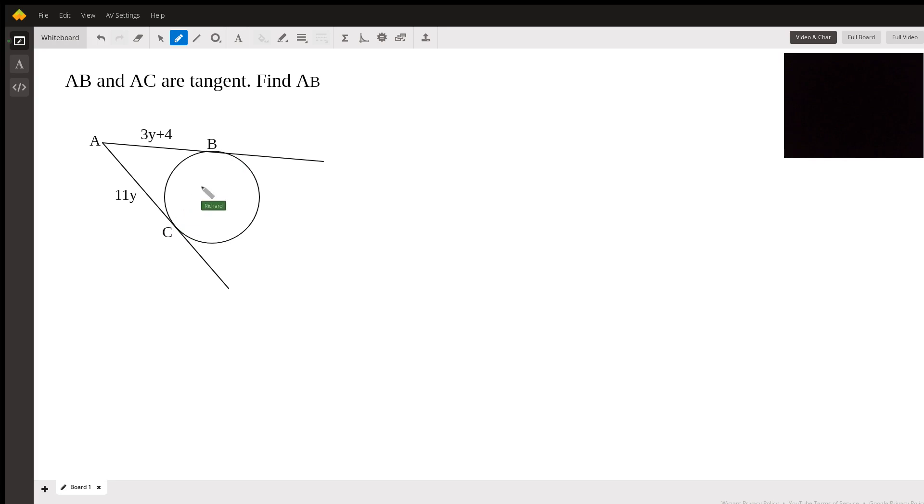And it turns out that these two line segments AC and AB are congruent with each other. So to solve this we just set this up: 3Y plus 4 equals 11Y.